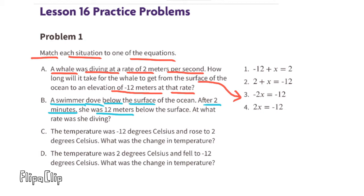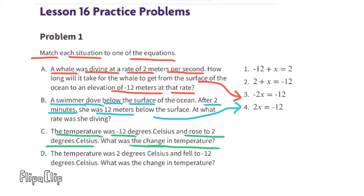Situation B: a swimmer dove below the surface of the ocean. After two minutes she was 12 meters below the surface. At what rate was she diving? We're looking for an equation that has the diver diving for two minutes at an unknown rate to reach negative 12 meters. Situation B is a perfect match with equation 4.